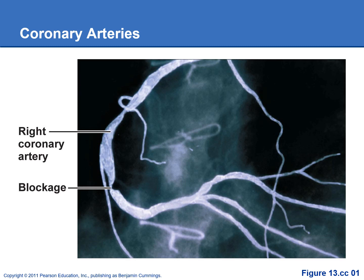This is called an angiogram, where fluorescent dye is injected into the patient and an X-ray is taken so you can see the dye flowing through the coronary arteries. Any place where the artery is narrowed indicates a partial blockage — there's still dye passing through, but this is a heart attack waiting to happen. They would likely place a stent in that coronary artery to keep it open and prevent a full blockage.